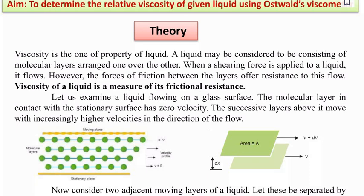Let us examine a liquid flowing on a glass surface. The molecular layer in contact with the stationary surface has zero velocity. It is not moved. The successive layers above it move with increasingly higher velocities in the direction of flow.